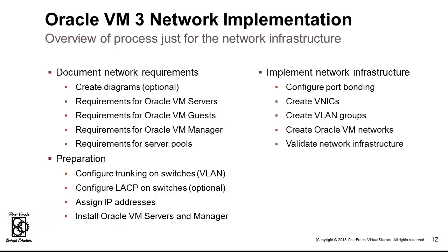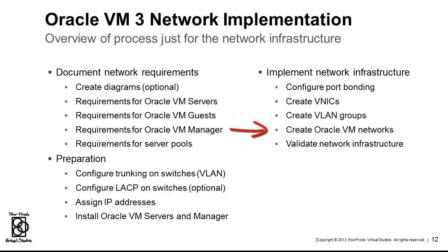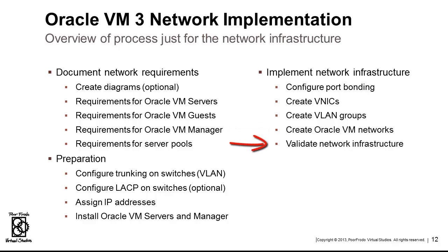Now, once everything is in place and ready to go, you simply step through your network implementation plan to accomplish the following tasks in the order shown — and the order is significant. Configure your port bonding on all servers. Then create your pool of virtual MAC addresses. Then create the VLAN groups. About 90% of your networking is done when you create the VLAN groups. Then move on to create the Oracle VM networks, and then validate your network infrastructure.